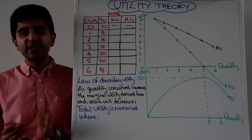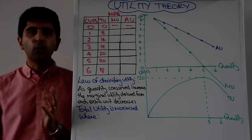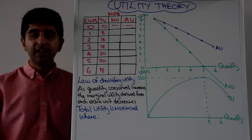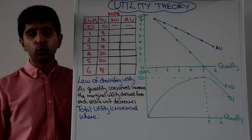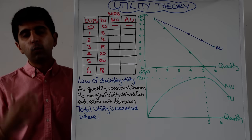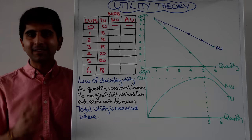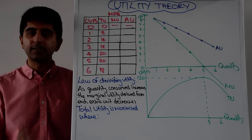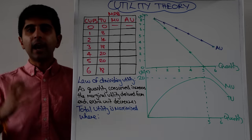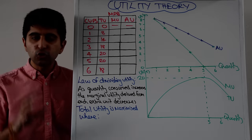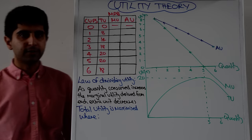Hi everybody. According to traditional neoclassical thought, economic agents will always look to maximise their benefit — that is firms maximising profits, governments maximising the social welfare of their citizens, workers maximising the welfare they derive at work, and consumers maximising their utility when they make consumption decisions. In this video we're going to isolate utility theory and understand in more detail where consumers should consume in order to maximise their utility.